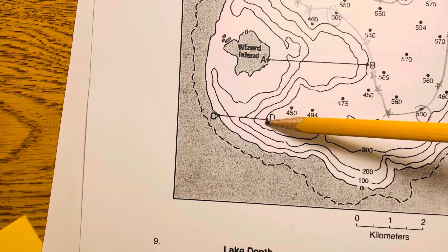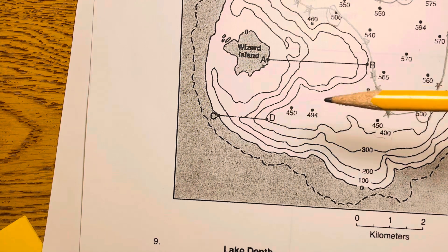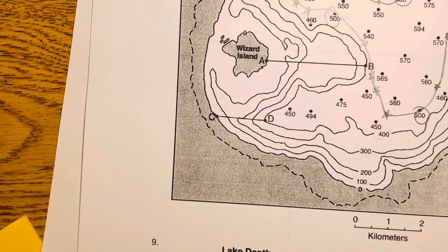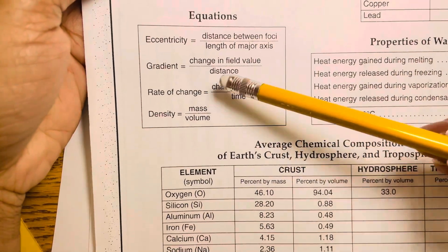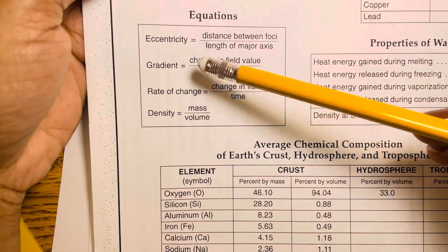The first thing you need to do for gradient: if you go on your Regents reference table page one, you'll see the gradient equation. It says change in field value divided by distance.